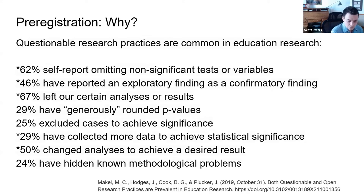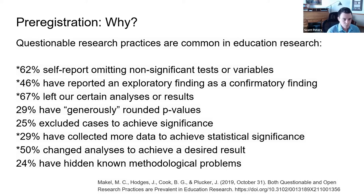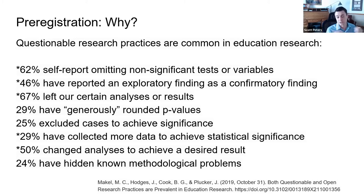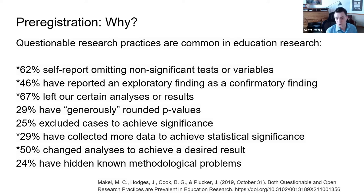This is from Matt Makel's 2019 paper in Educational Researcher. These are questionable research practices — some more questionable than others. These practices are really common: a survey sent to major authors in major education journals found that 62% admitted omitting non-significant analyses or variables — as if they were never there. That's a perfect example of how the published research is not a truly representative indicator of all research done.